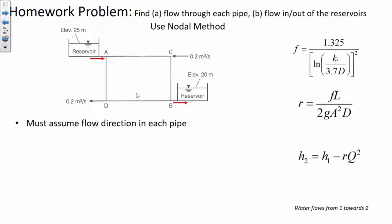Flow comes in at junction C at 0.2 cubic meters per second. So where does it go? Let's assume — and this may not be right — we're going to go through calculations and assume a direction. But if the flow rates just don't add up, if continuity isn't honored at a junction, then we know our flow assumption was wrong. Let's say the flow goes toward A and toward B. So what we know at junction C is that Q_AC plus Q_BC equals 0.2, because flow in equals flow out.